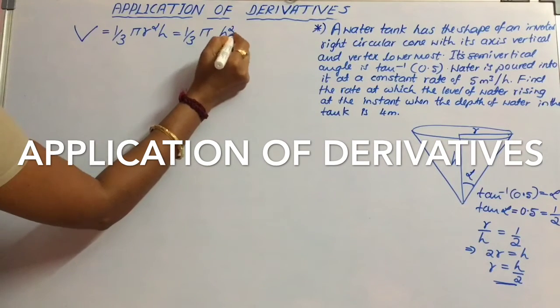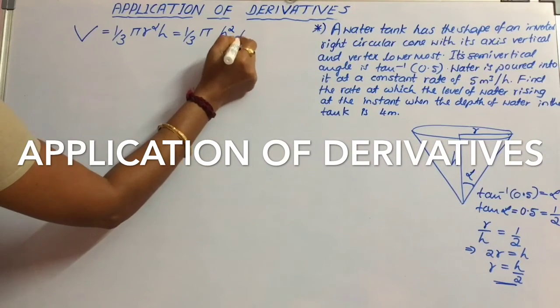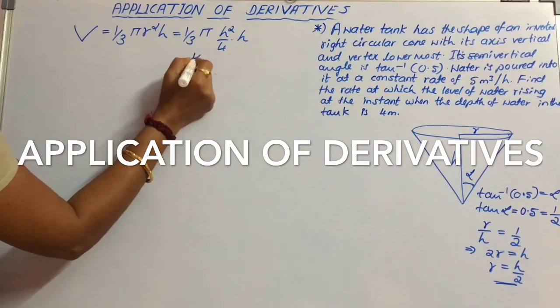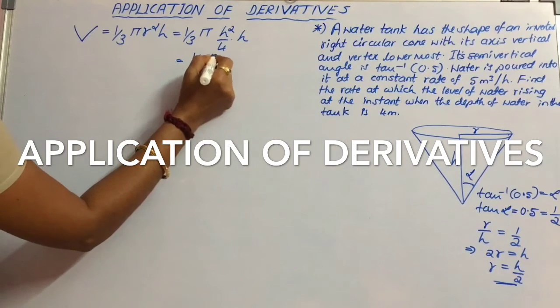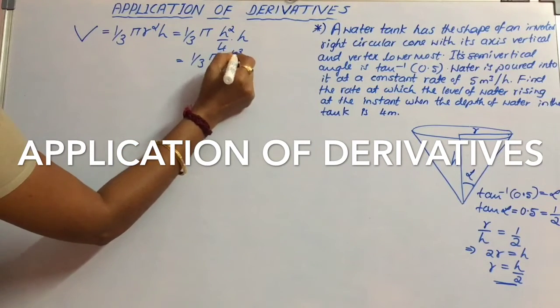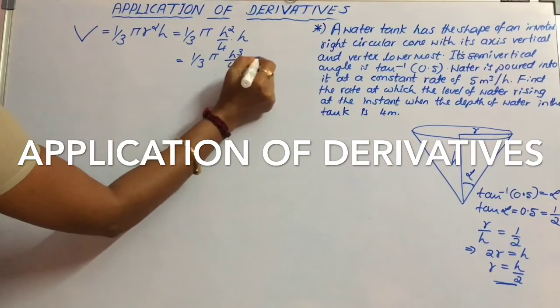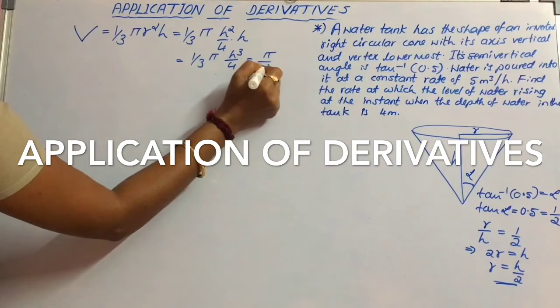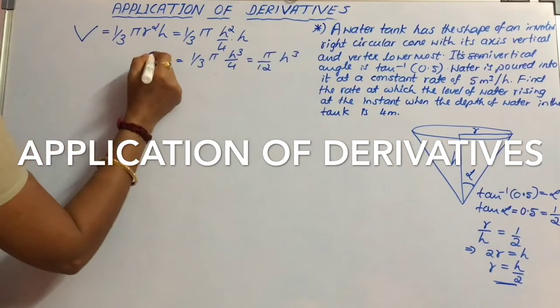So r squared is equal to h squared by 4 into h. This can also be written as 1 by 3 pi h cubed by 4, that is pi by 12 h cubed. This is V.